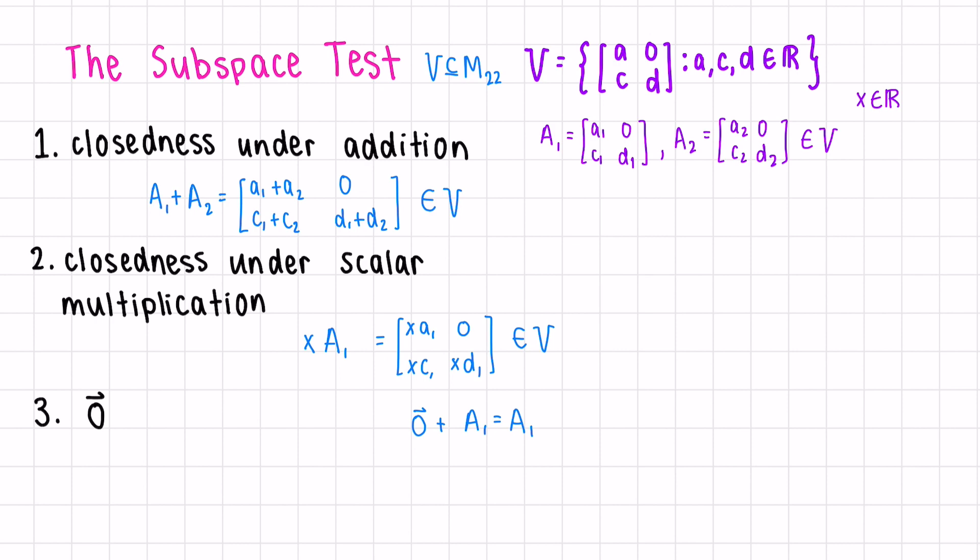In this case, we want to see that the zero vector of M22 is the same as the zero vector in V. The zero vector of M22 is included in V. What's the zero vector of 2 by 2 matrices? Well, this is just 0, 0, 0, 0. And in this case, we can clearly see this is included in V.